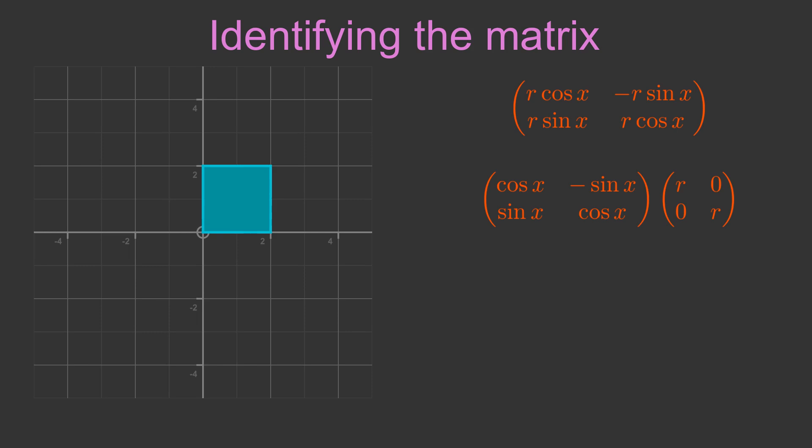The first matrix is cos x minus sin x, sin x cos x. It only depends on x, not on r. The second matrix is r 0, 0 r. It only depends on r, not on x. You can easily verify this by multiplying the two matrices together.